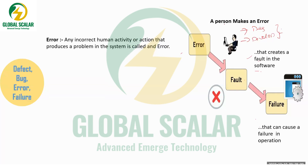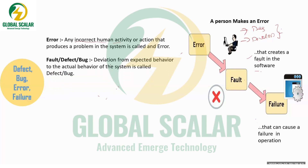An error is any incorrect human activity or action that produces a problem in the system. It occurs when a person doesn't understand the requirement clearly or cannot represent it correctly in the software. Because of that, a fault or defect or bug is created in the software.